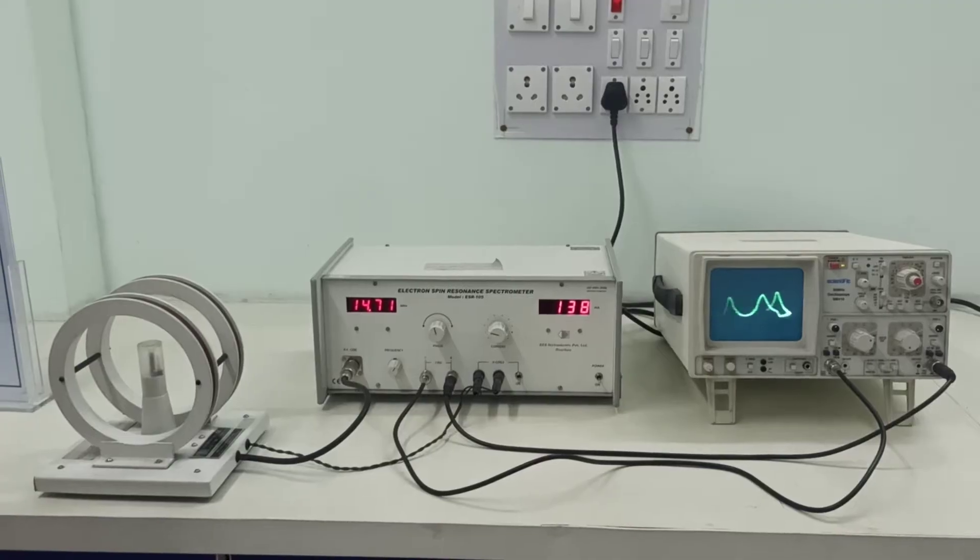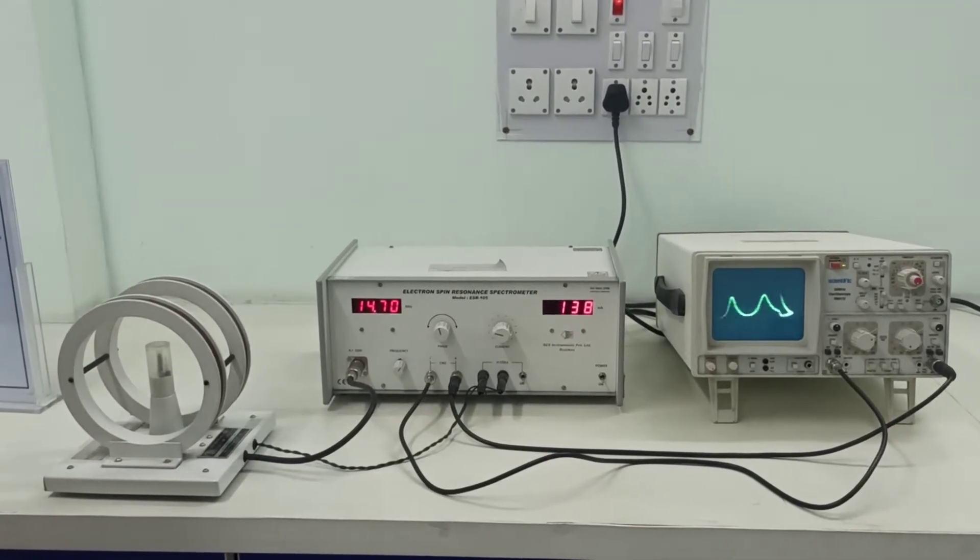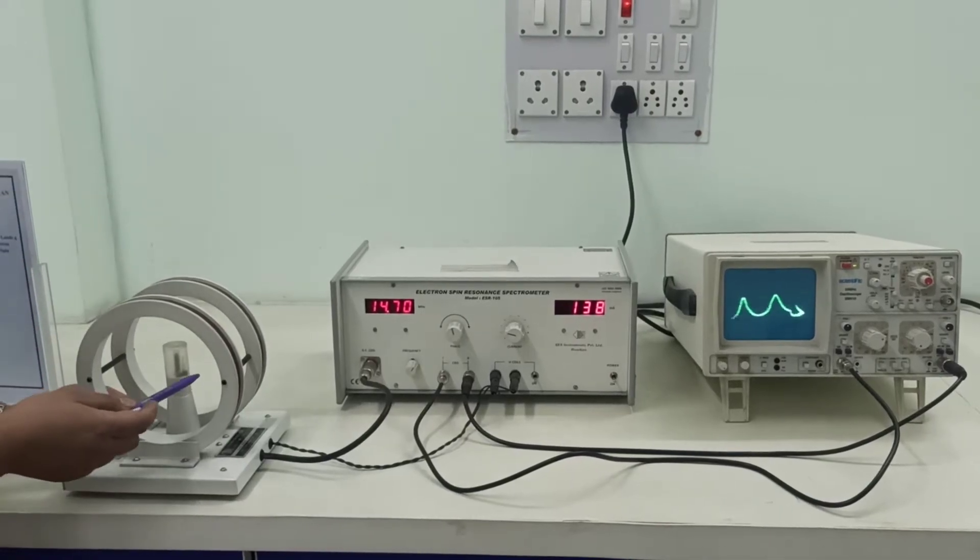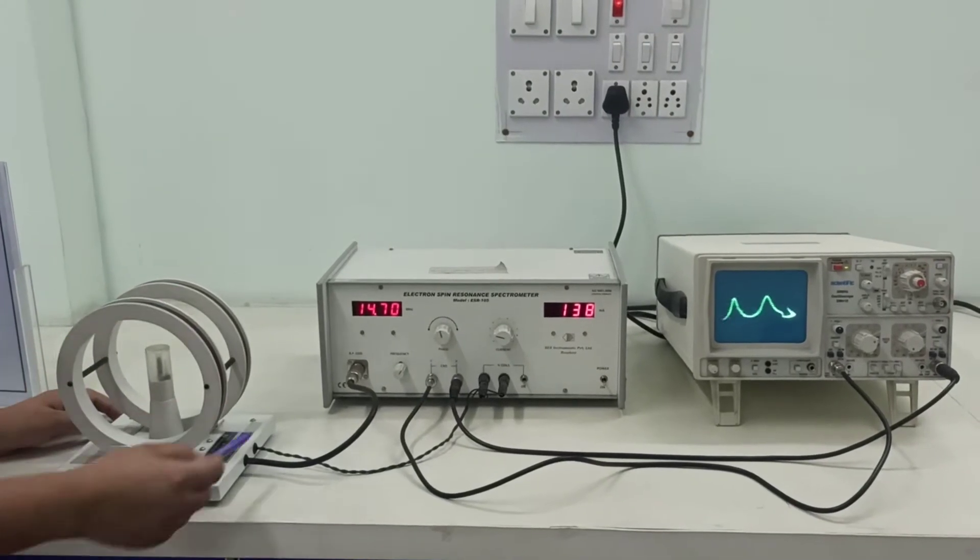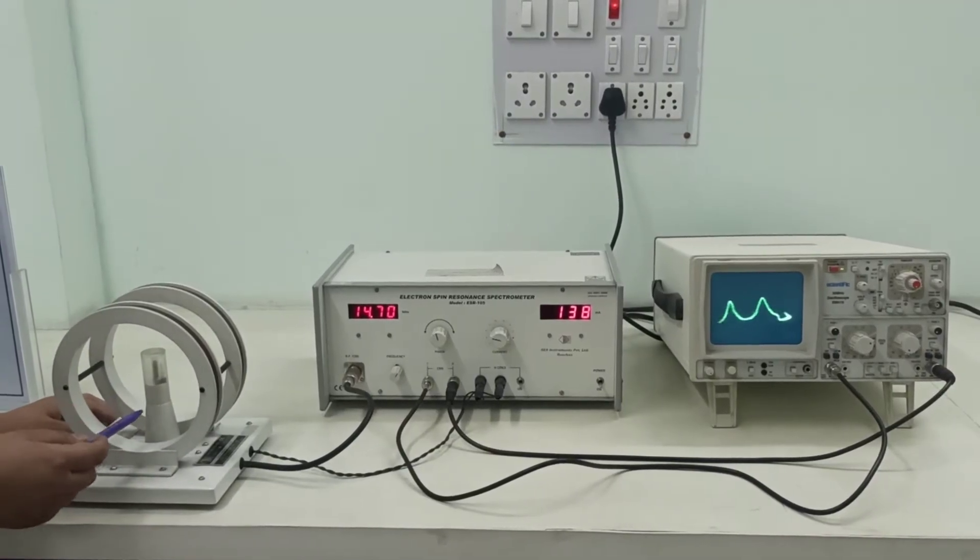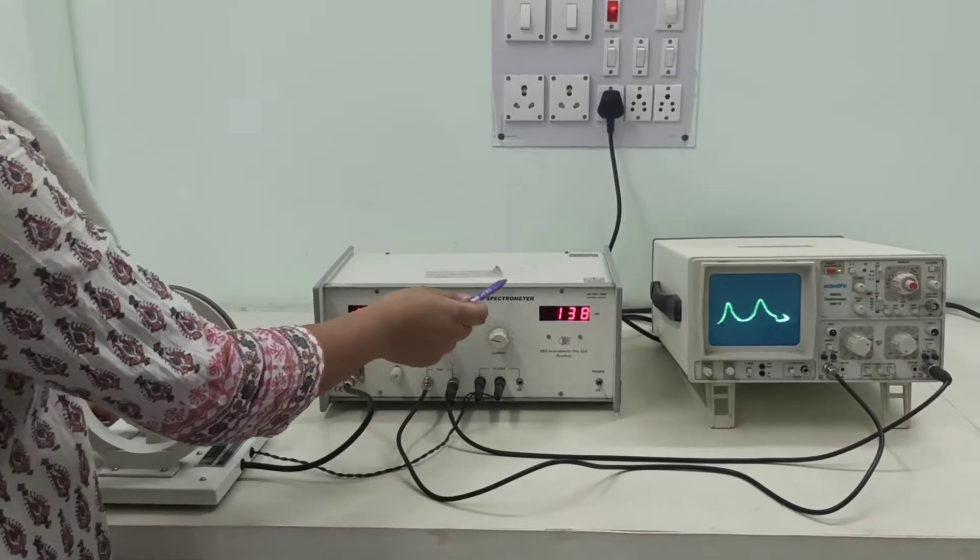In your ESR technique, we make use of a paramagnetic sample. The paramagnetic sample used here is diphenyl picryl hydrazine or DPPH, and it's placed here inside this Helmholtz coil. This is your electron spin resonance spectrometer.